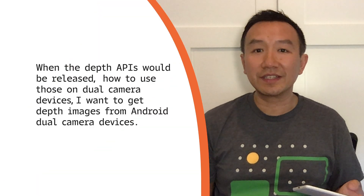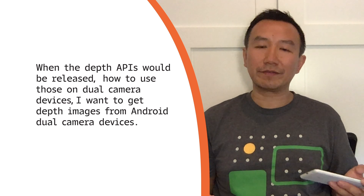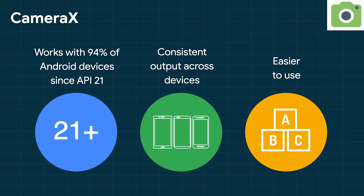When will the depth APIs be released, and how do you use those on dual camera devices? I want to get depth images from Android dual camera devices. Actually, since Android 6.0 or API level 23, the platform can report whether a camera can produce depth measurements from its field of view. You can do so by querying the object called CameraCharacteristics and checking whether it includes a key called REQUEST_AVAILABLE_CAPABILITIES_DEPTH_OUTPUT. To see a more complete implementation, check out our existing Camera2 example on GitHub. Speaking of Camera2 — while it's flexible, it can be quite complex for some developers. If your goal is to implement common camera use cases like capturing a picture, check out the latest CameraX Jetpack library. It provides abstraction for common use cases, is easier to use, works on 94% of devices since API level 21, and ensures consistency across devices.